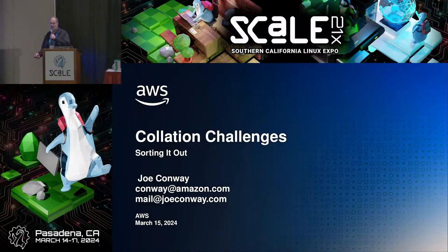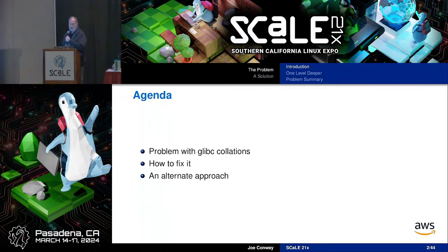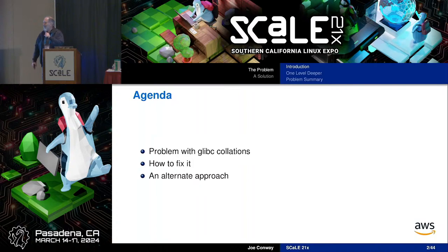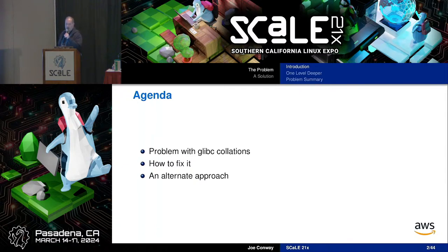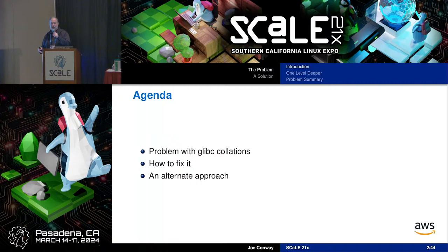I am also on the sysadmin team, the security team, and the team that recognizes contributors, among other things. I'm a manager at Amazon running the team that does upstream Postgres contribution. We're here to talk about the problem with GLibC collations. I'm going to show you examples that make it obvious this is a problem — bigger than most people recognize — and what you'd have to do to fix it.